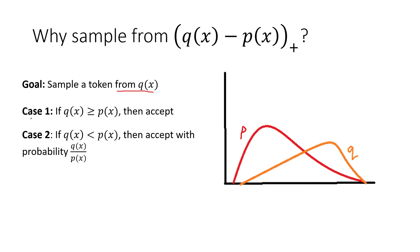Let's look at what this means graphically. So in case one, we have a token sampled from p(x), and q(x) is greater than p(x). So we're in this bottom region of the graph where the p curve is less than the q curve. And case two is when q(x) is less than p(x). So we're in the bottom left region of the curve. And we have decided to accept with probability q over p.